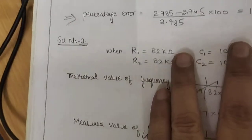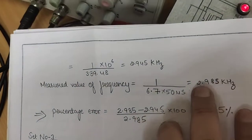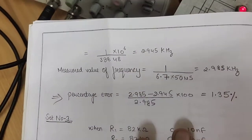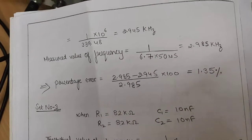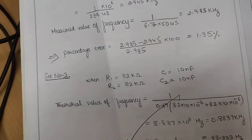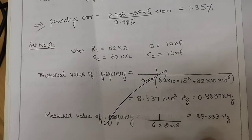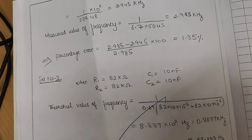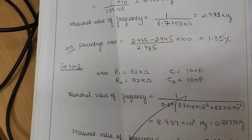In case two, we get a calculated frequency of 2.985 kilohertz by applying the same frequency formula. Similarly, in case three where we use 10 nanofarads of capacitance, we get a calculated frequency of approximately 895 hertz. These are the analytical values calculated under three different cases of capacitances.